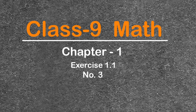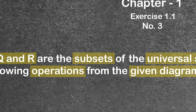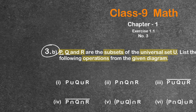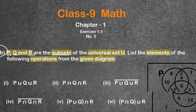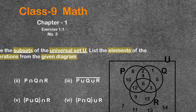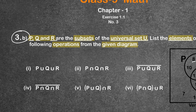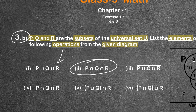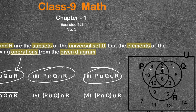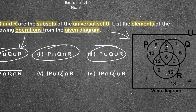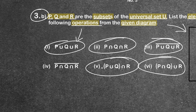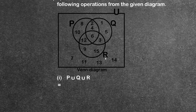Hello and welcome everyone. Today I am going to be doing Math Chapter 1, Exercise 1.1, Number 3. P, Q, and R are the subsets of Universal Set U. List the elements from the following operations. From the given diagram, we will work through each operation.